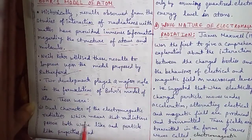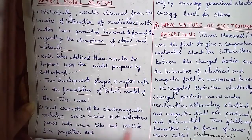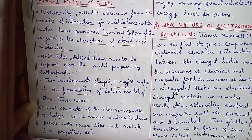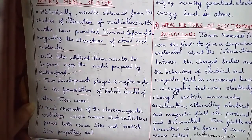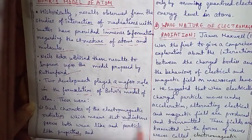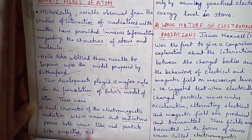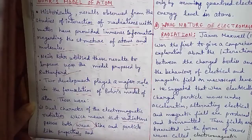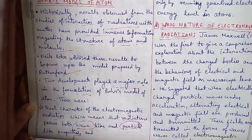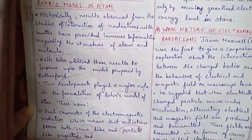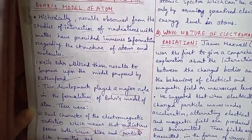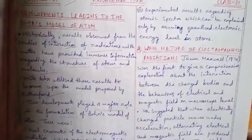The first development is that radiation possesses both wave-like and particle-like properties — the dual character of electromagnetic radiation. This means that radiation can exist in the form of waves as well as in the form of particles: particle-like property and wave-like property.